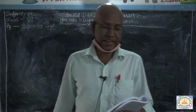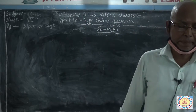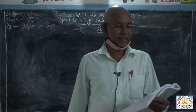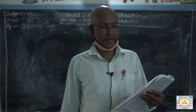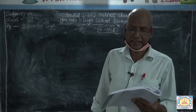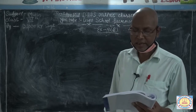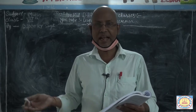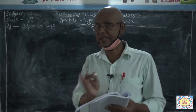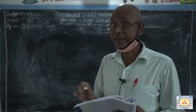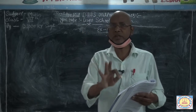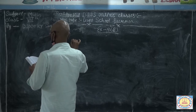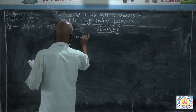Question number nine. A contractor employed 210 men to build a house in 60 days. After 12 days, he was joined by 70 more men. In how many days will the remaining work be finished? After 12 days, the remaining time would have been 60 minus 12 equals 48 days, and the total men become 210 plus 70 equals 280 men.